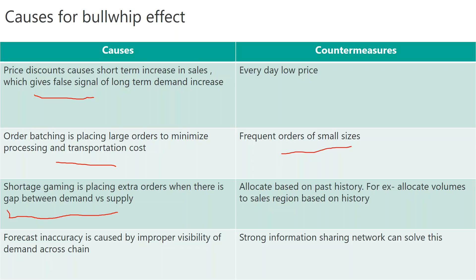The countermeasure is to allocate volumes based on past history. For example, allocate to sales regions based on their historical buying patterns. If a sales region historically buys 100K but suddenly requests 200K, you should question why — statistically they have been doing 100K, so what is the reason for suddenly jumping to 200K?